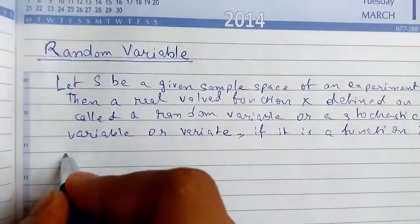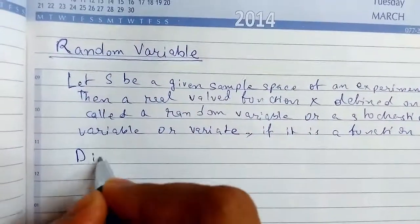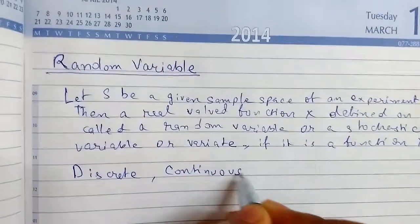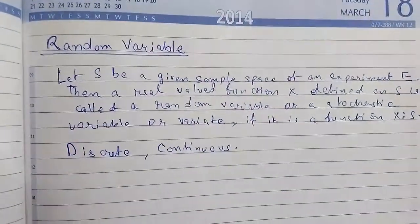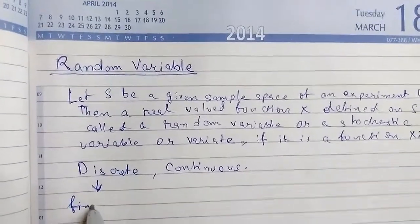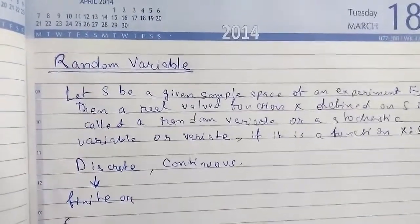So we can see that there are two types of random variable. First of all is discrete and the other is continuous. A random variable is said to be discrete if the spectrum is finite or countably infinite.